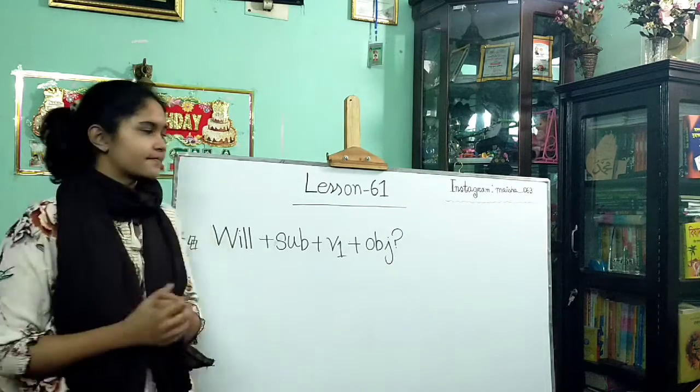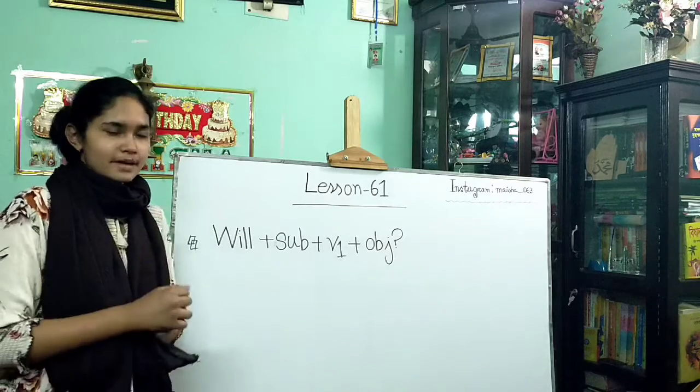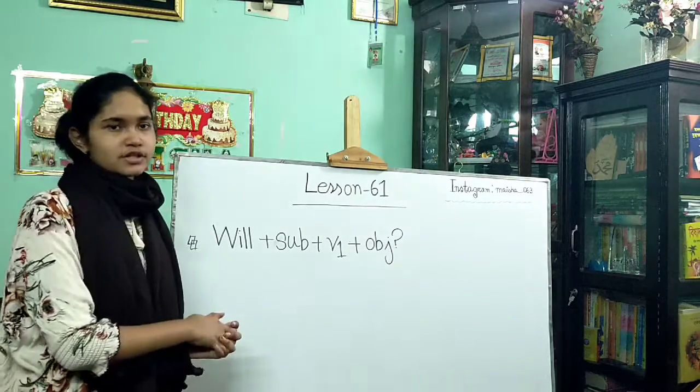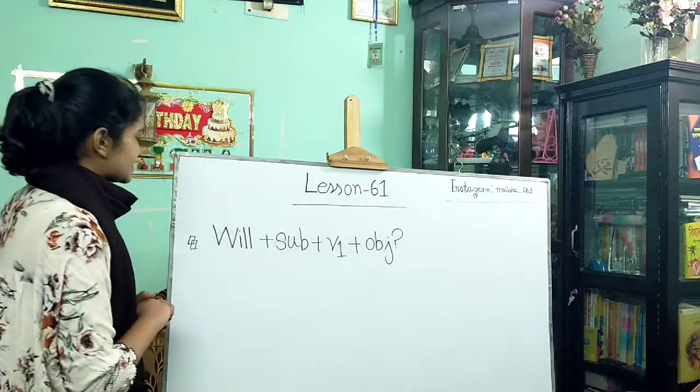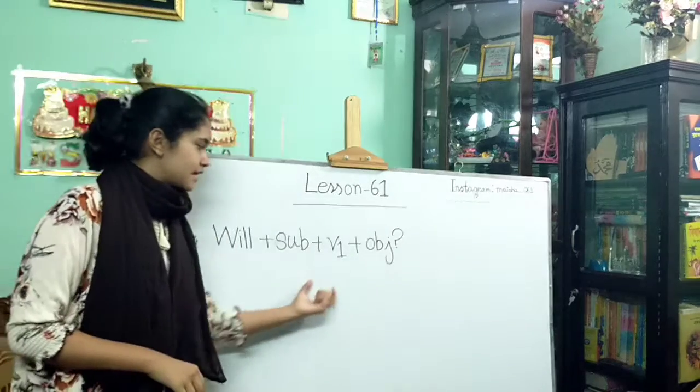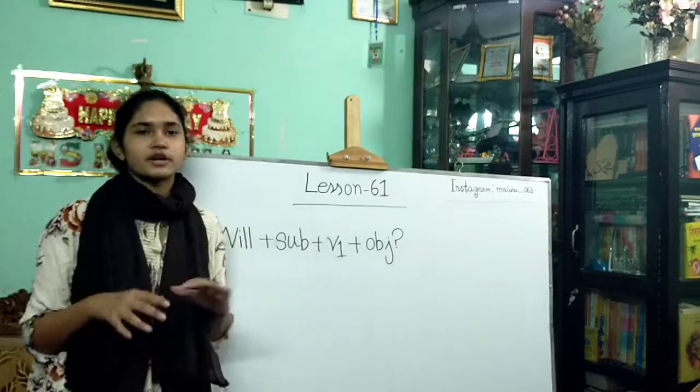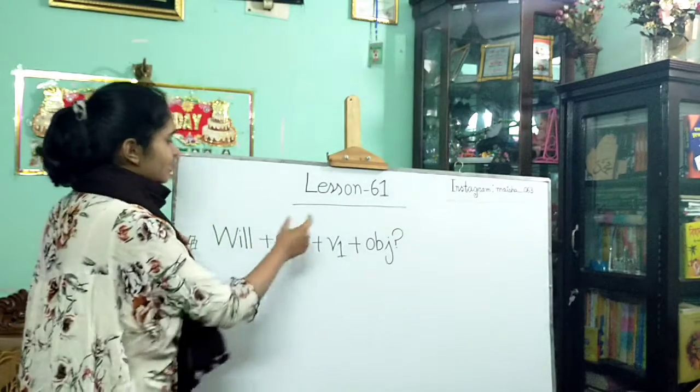You can make many sentences with this structure. Again, let's repeat today's structure: will plus subject, then verb one, then object. For example, we can make will, subject I for specific, and then go there.